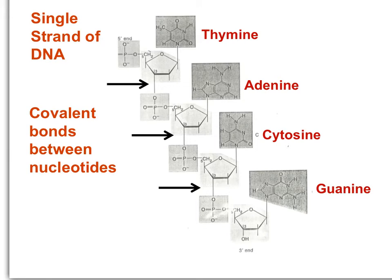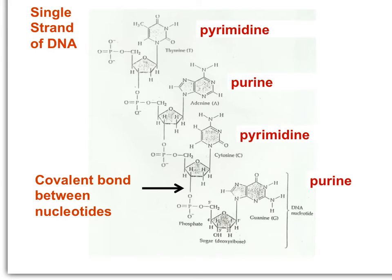This diagram displays more molecular detail. You can see the deoxyribose sugar, the phosphate groups, and the four bases: thymine, adenine, cytosine, and guanine. Adenine and guanine are both two-ring bases known as purines, whereas thymine and cytosine are both single-ring bases known as pyrimidines. The covalent bonds joining nucleotides link phosphate, deoxyribose, and base — one nucleotide — to the next.